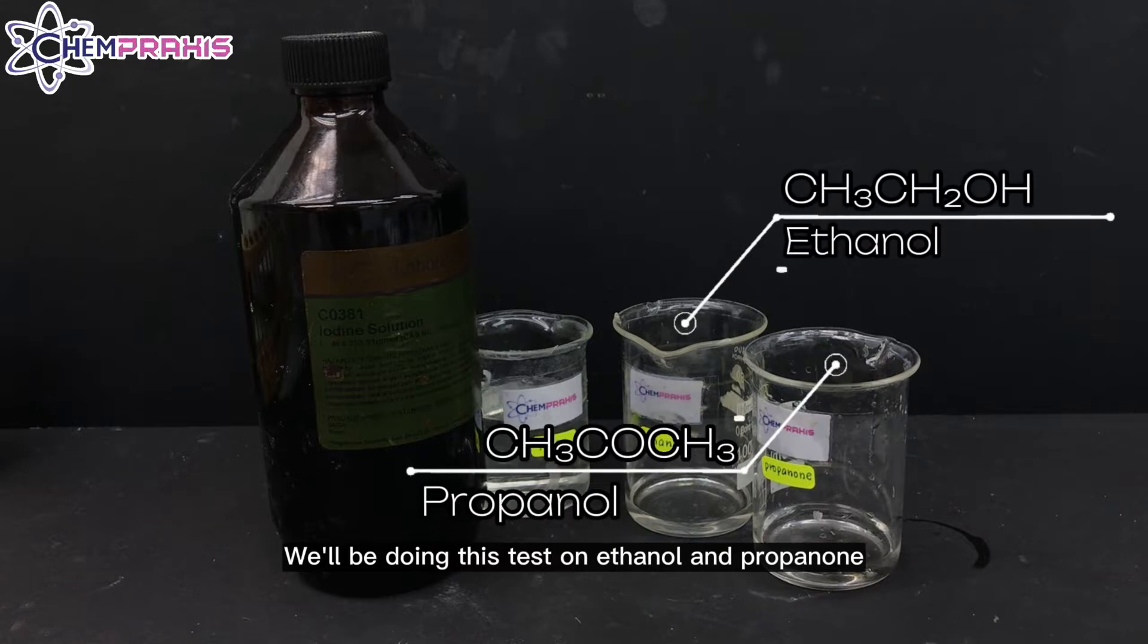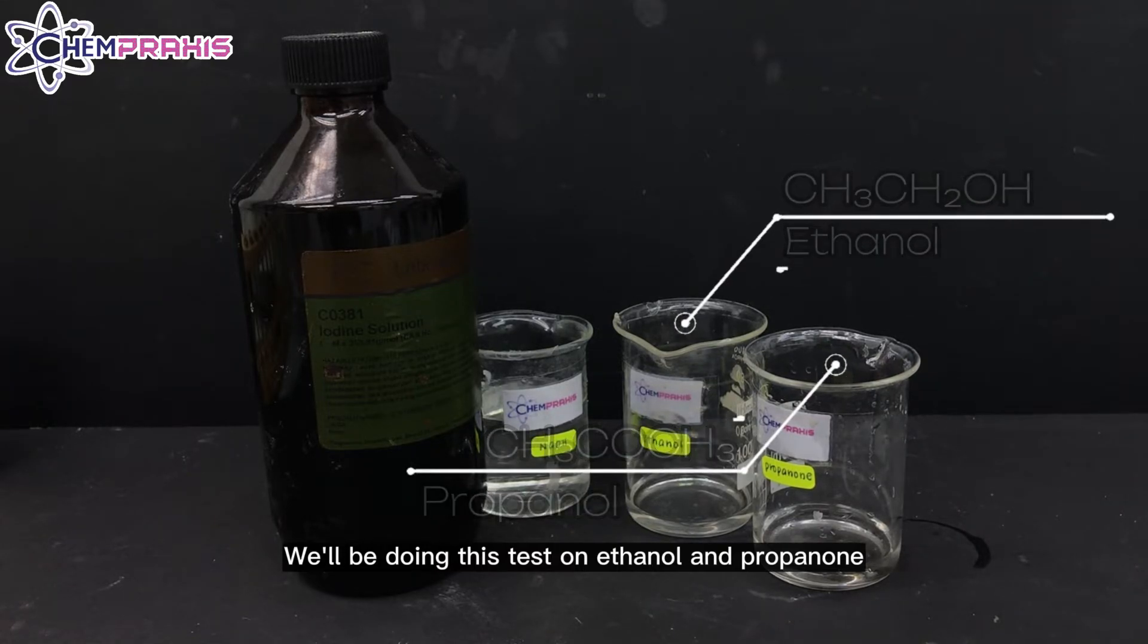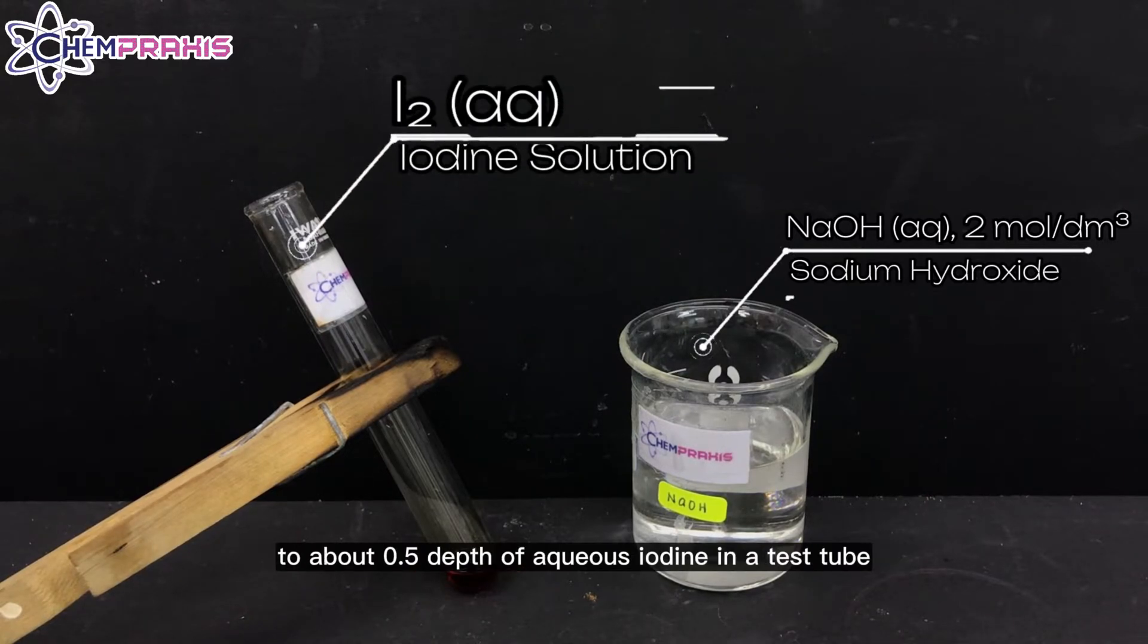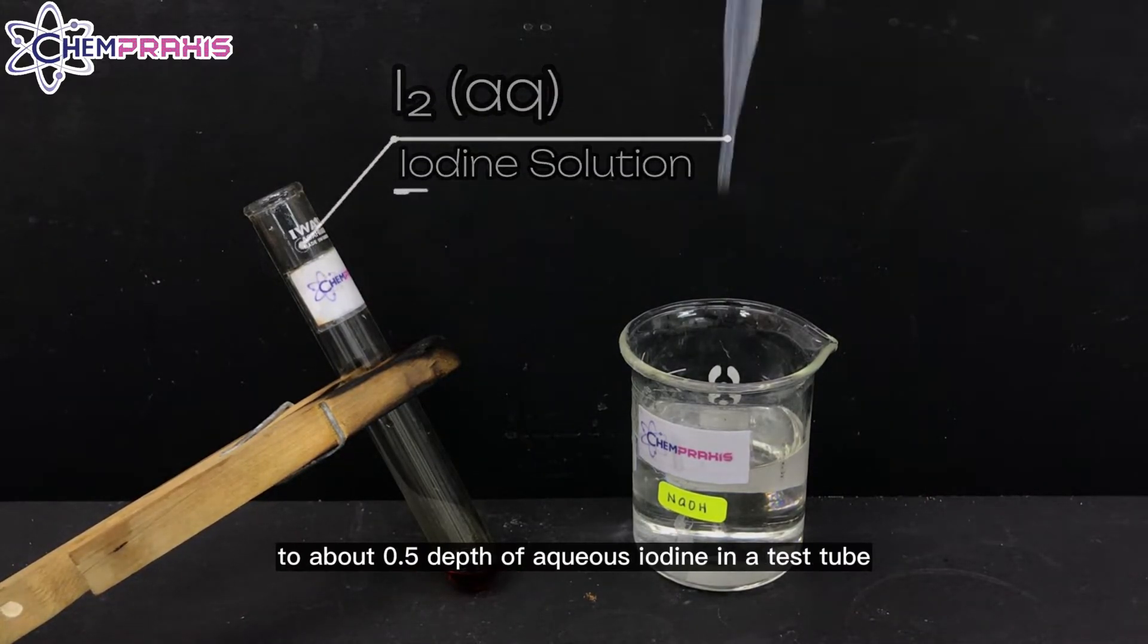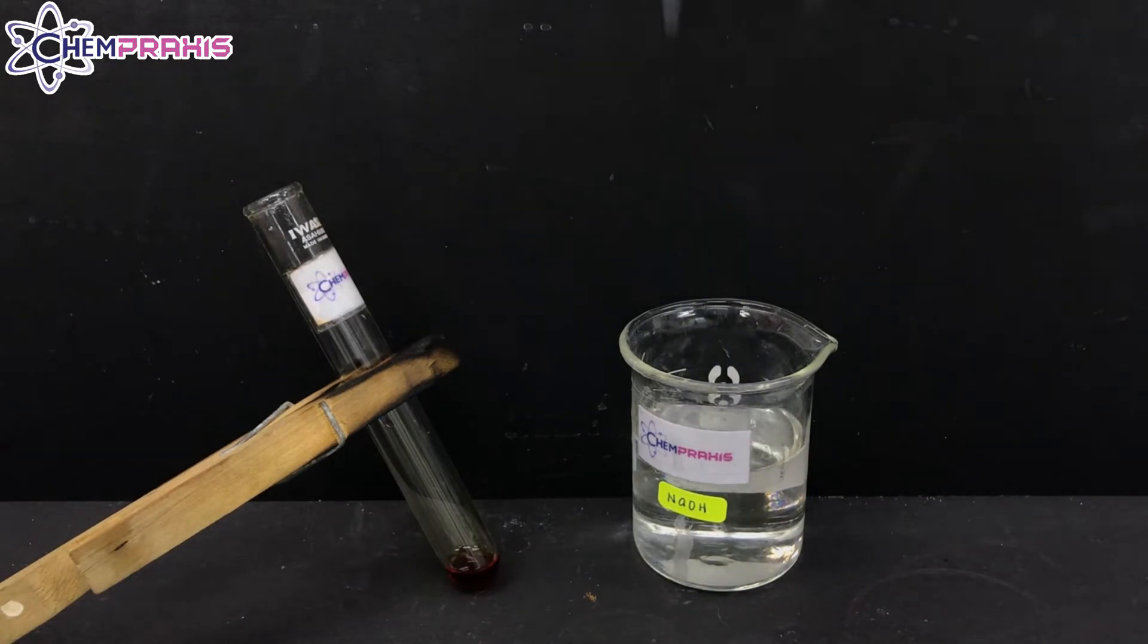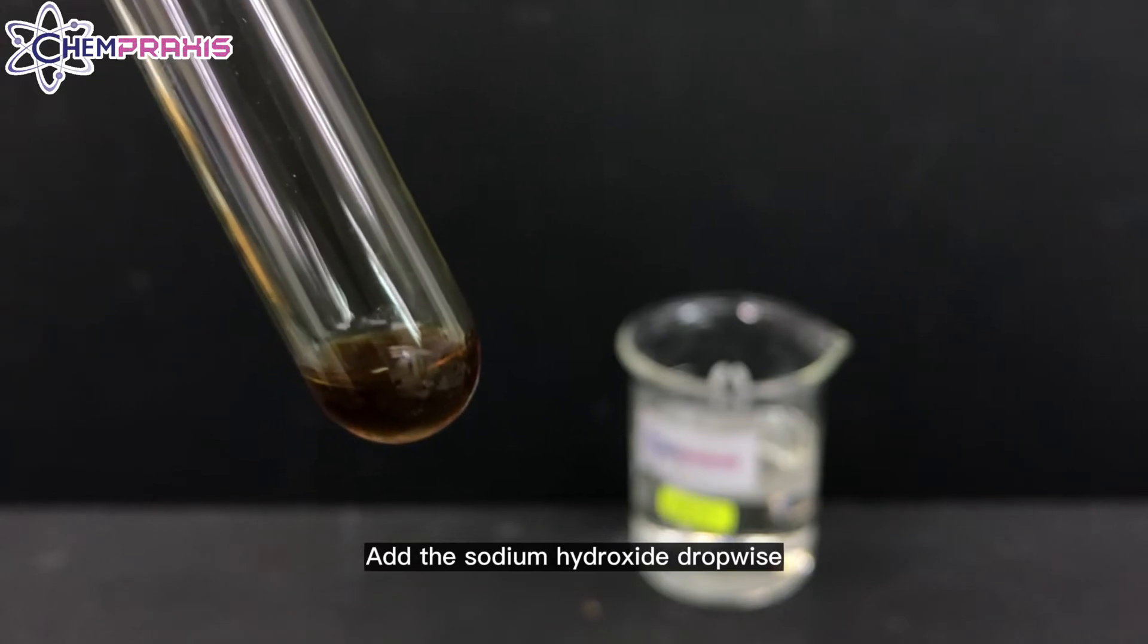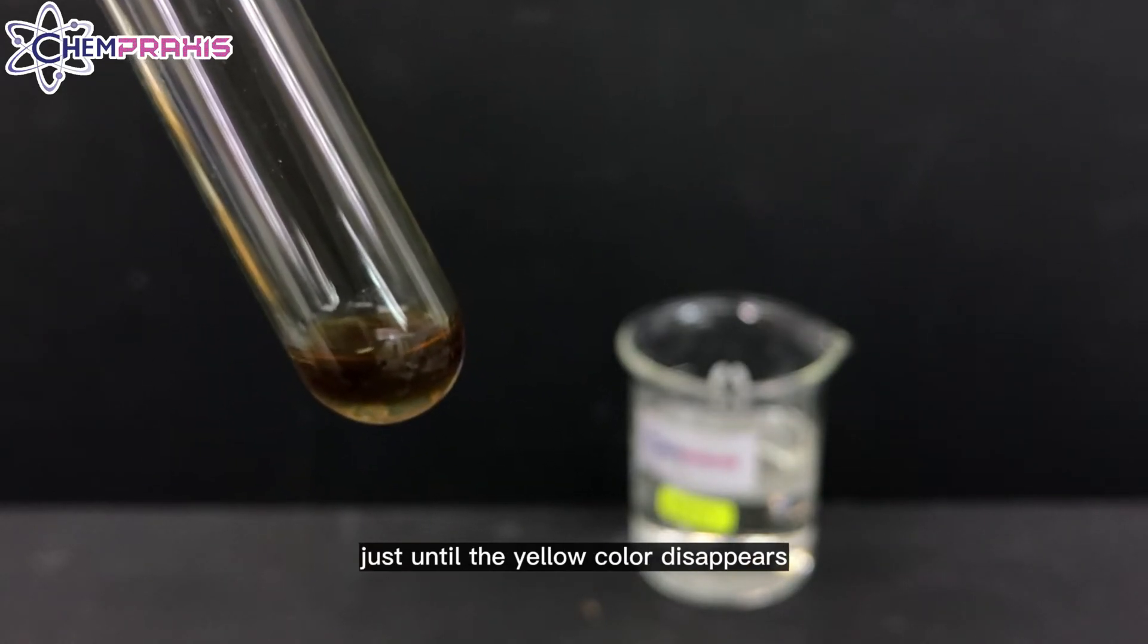We'll be doing this test on ethanol and propanol. First, we'll add some aqueous sodium hydroxide solution to about 0.5 depth of aqueous iodine in a test tube. Add the sodium hydroxide dropwise just until the yellow color disappears.